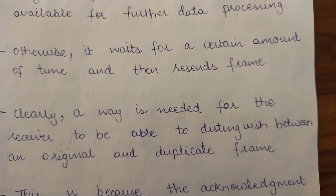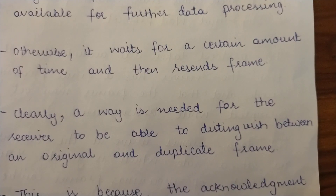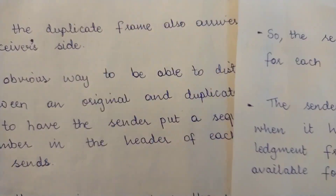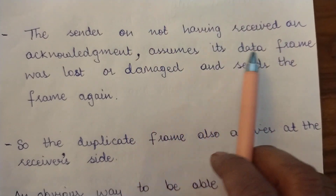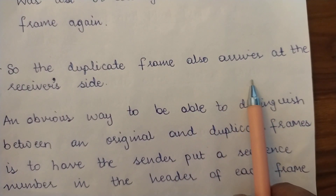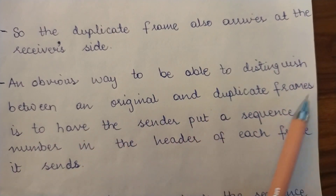If the sender sends the same data frame again, that is a duplicate frame. The receiver has already received this frame successfully, but when the sender doesn't receive the acknowledgement within the time interval, it resends the same frame. The duplicate frame also arrives at the receiver's side — the receiver already has the original frame and now a duplicate has also been received. So a way is needed to distinguish between the original and the duplicate frame.